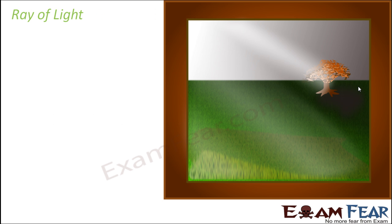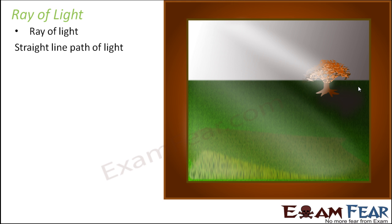Now I have often been using the term 'ray of light' — so what is a ray of light? A ray of light is a straight-line path of light. Light always travels in a straight path, and one single line or one single part of light is called a ray of light. In diagrams it is often represented with an arrow along a straight line.